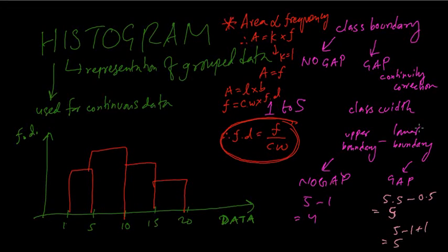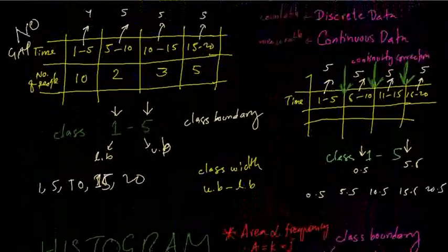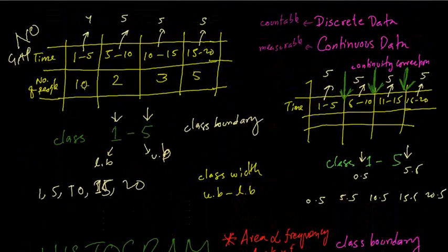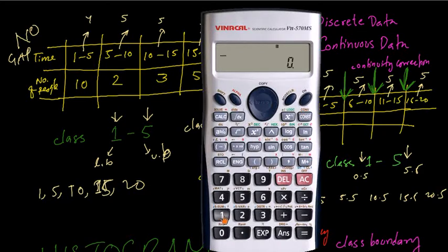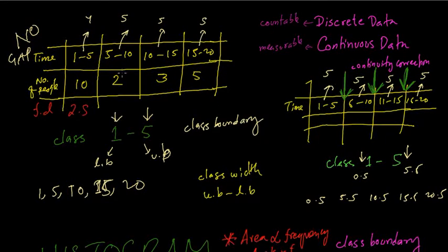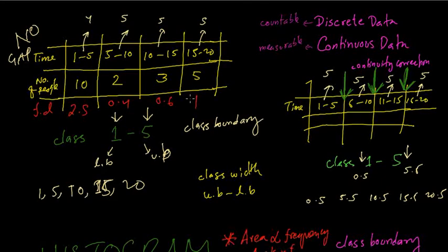Now let's calculate the frequency density for the grouped data. For frequency 10 and class width 4: frequency density = 10 ÷ 4 = 2.5. For frequency 2 and class width 5: 2 ÷ 5 = 0.4. For frequency 3 and class width 5: 3 ÷ 5 = 0.6. For frequency 5 and class width 5: 5 ÷ 5 = 1.